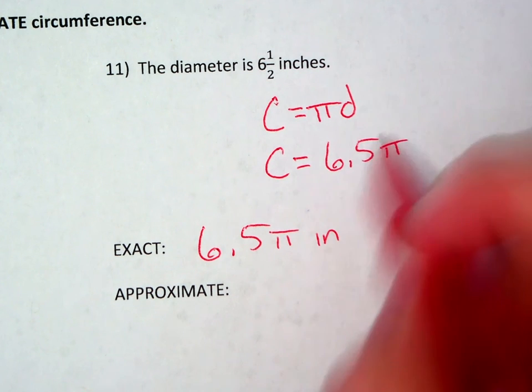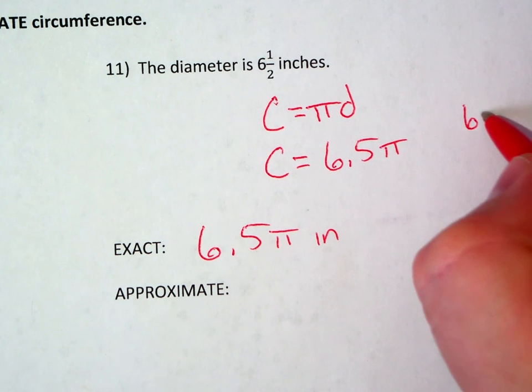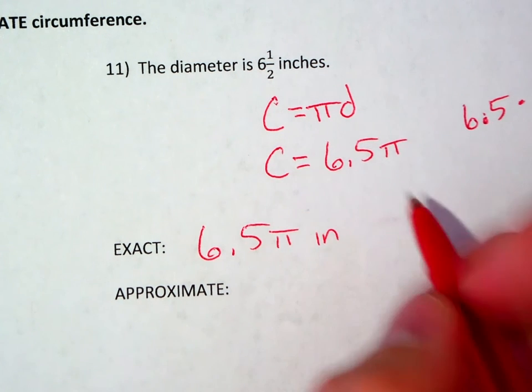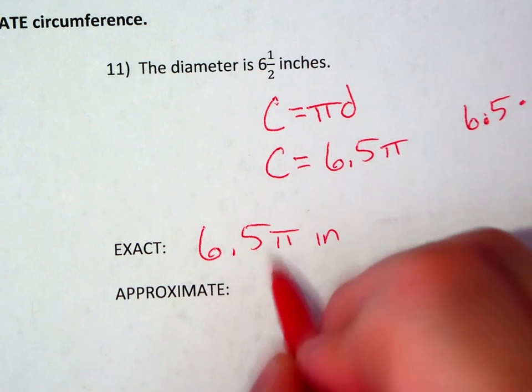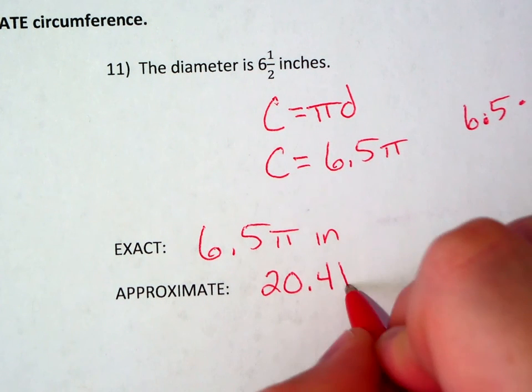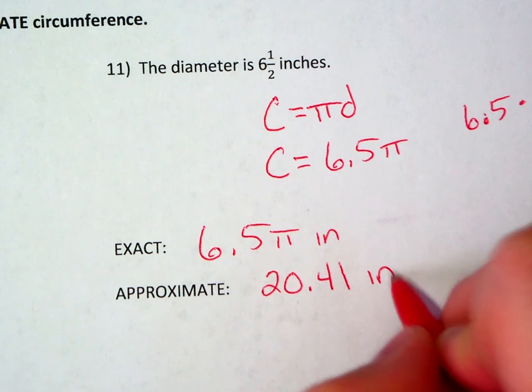Now to find the approximate again, I take 6.5 and I multiply it by 3.14. So my approximate answer then is 20.41 inches.